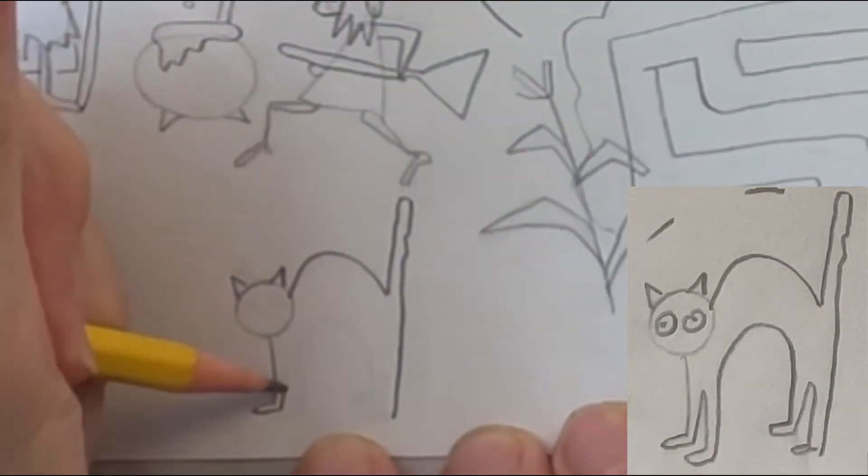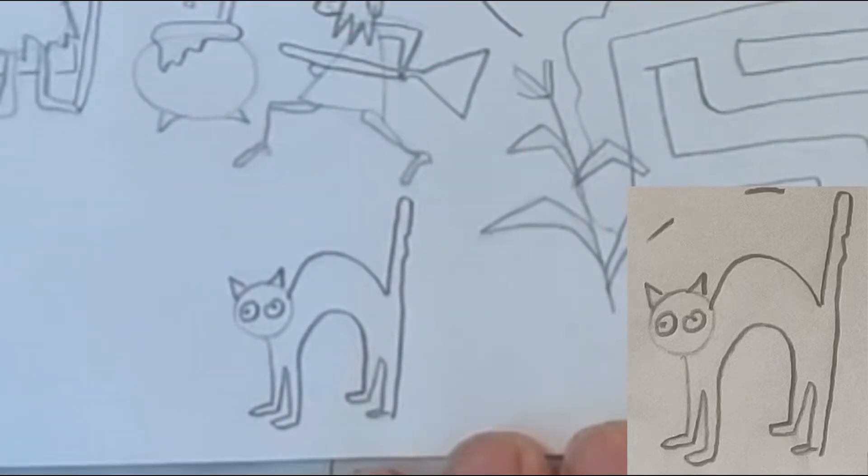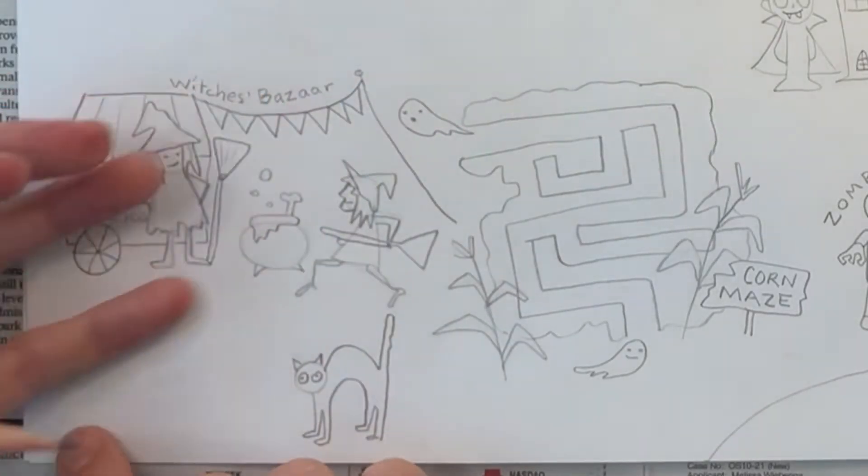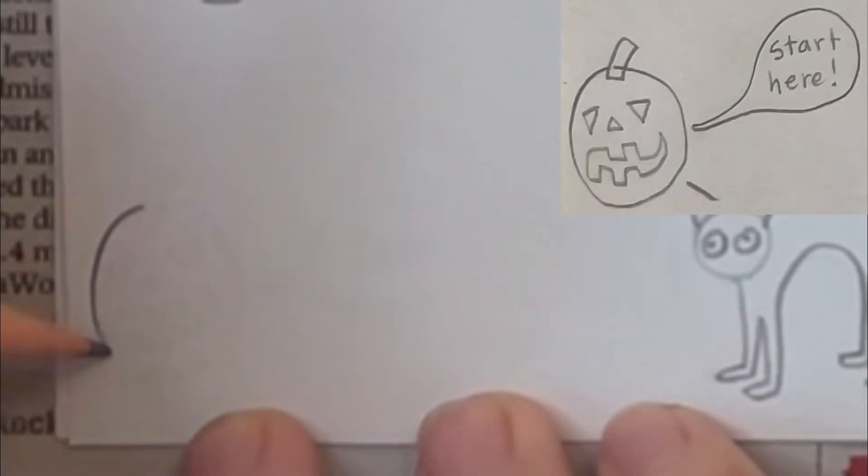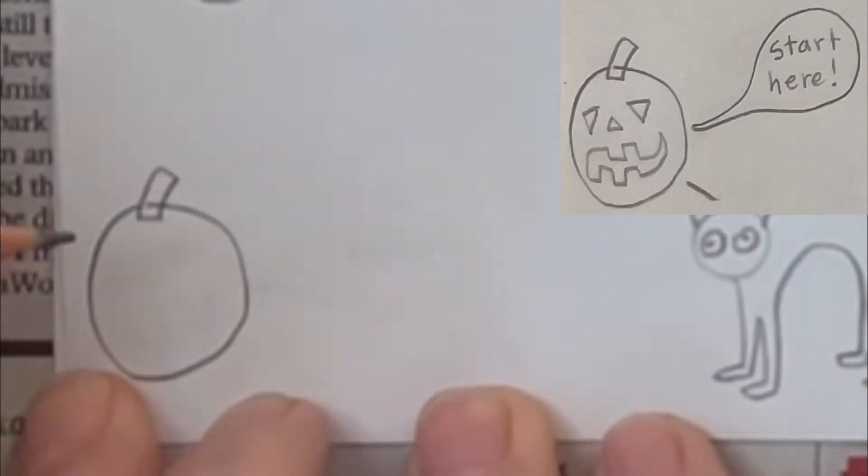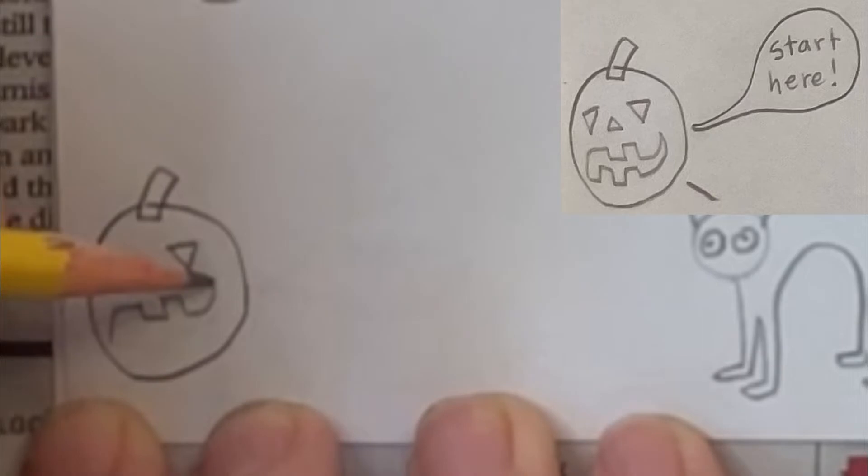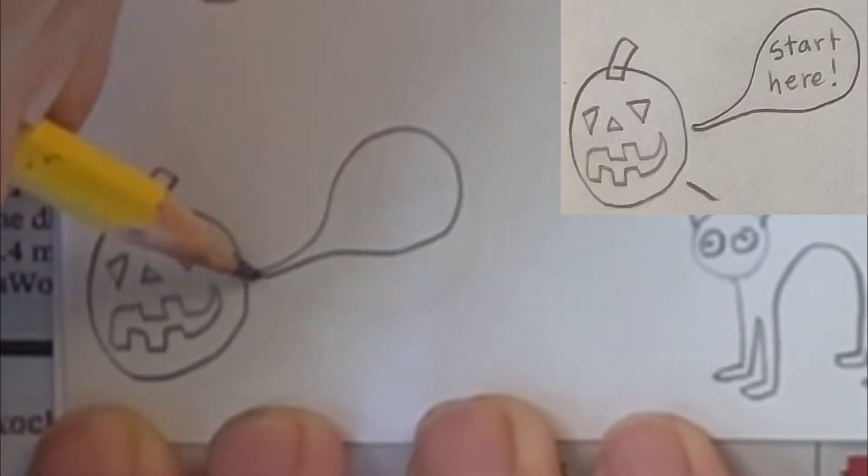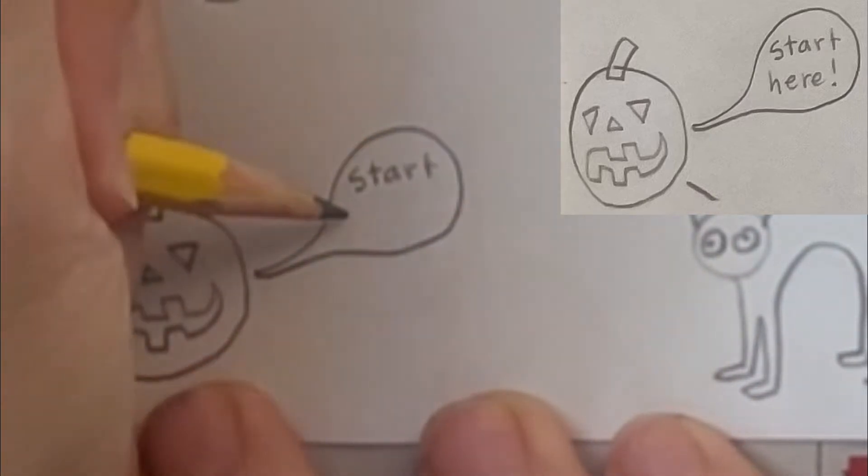Down here in front of the witches bazaar, I'm drawing a spooky black cat with an arching back. Right here on the bottom left corner is where the trail for my treasure map will begin, so I'm drawing a jack-o'-lantern with a speech bubble that says start here.